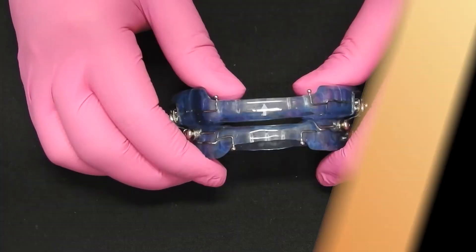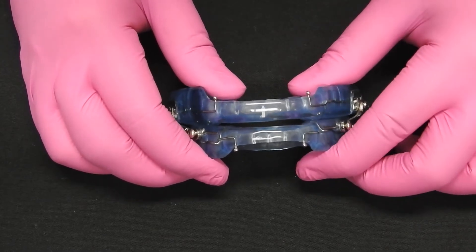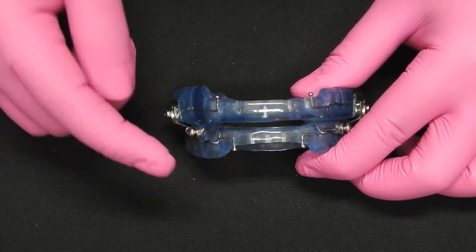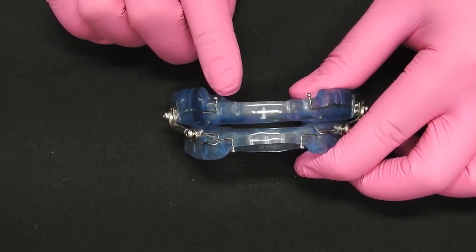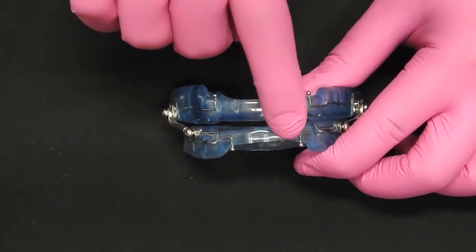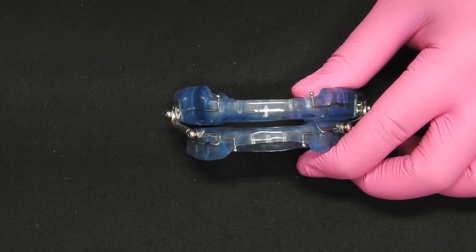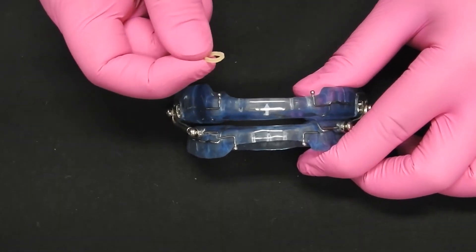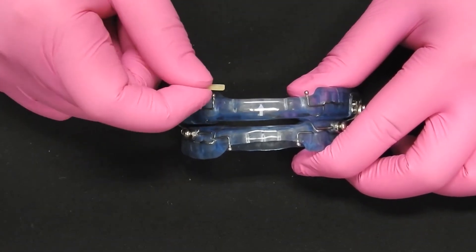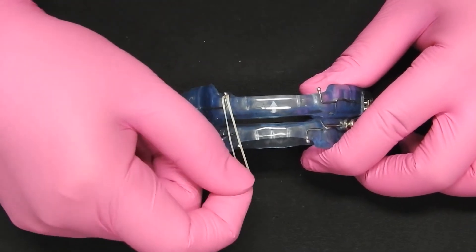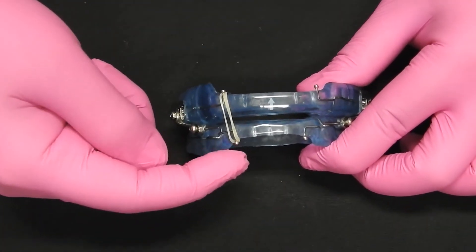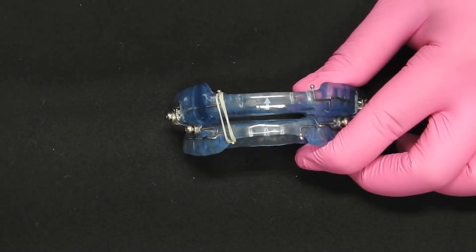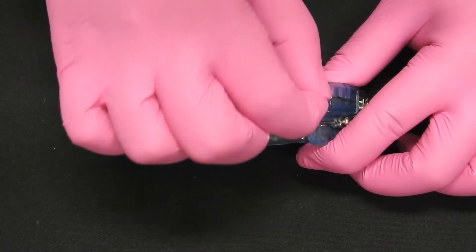Adding elastics to your Herbst Advanced device. Locate where you will be adding the elastics. Take the elastic that has been prescribed to you by your doctor. Hook it on one arch and connect it to the other arch. Do this on both sides.